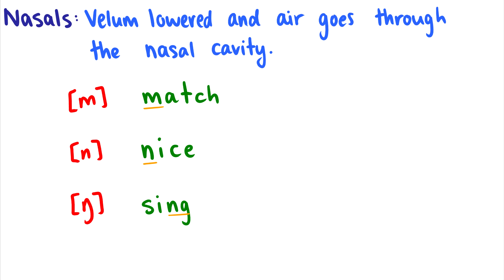So the M in match is your bilabial nasal stop. The N would be your alveolar nasal stop. And the eng would be your velar nasal stop. So this is the same place that K and G are made. So G, eng, you can feel they're in the same spot. So these are nasals, redirected through the nasal cavity.